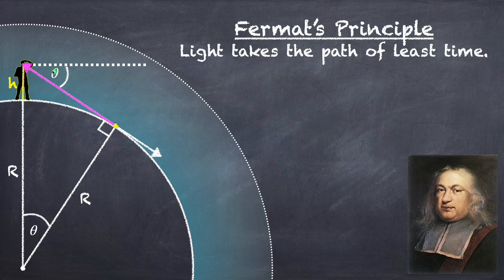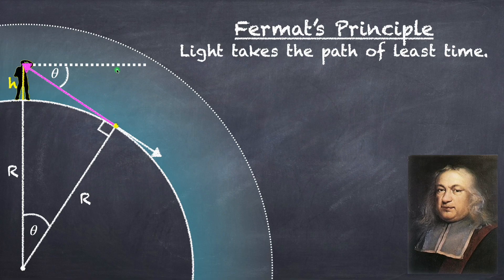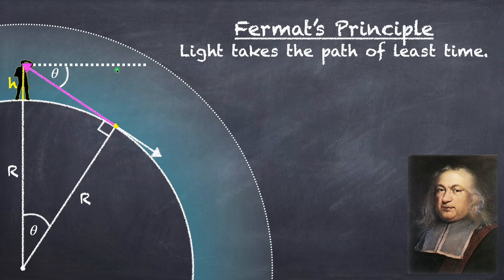And so similarly with light, it would like to travel at higher elevations where it can go faster, but if it goes too far out of the way, say if it goes too high up in elevation, even though it can go faster, it's going to start to take longer again because of the extra distance it's traveled.